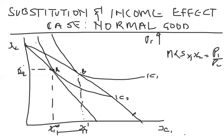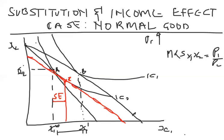The budget constraint shifts leftward until it reaches the point where it is tangent to the original indifference curve zero — that is, it achieves the same utility as point A. The shift continues until the new budget line meets indifference curve zero at a new point, which I'll call point C. So the difference between A and C is what we call the substitution effect, and the difference between C and B is what we call the income effect.